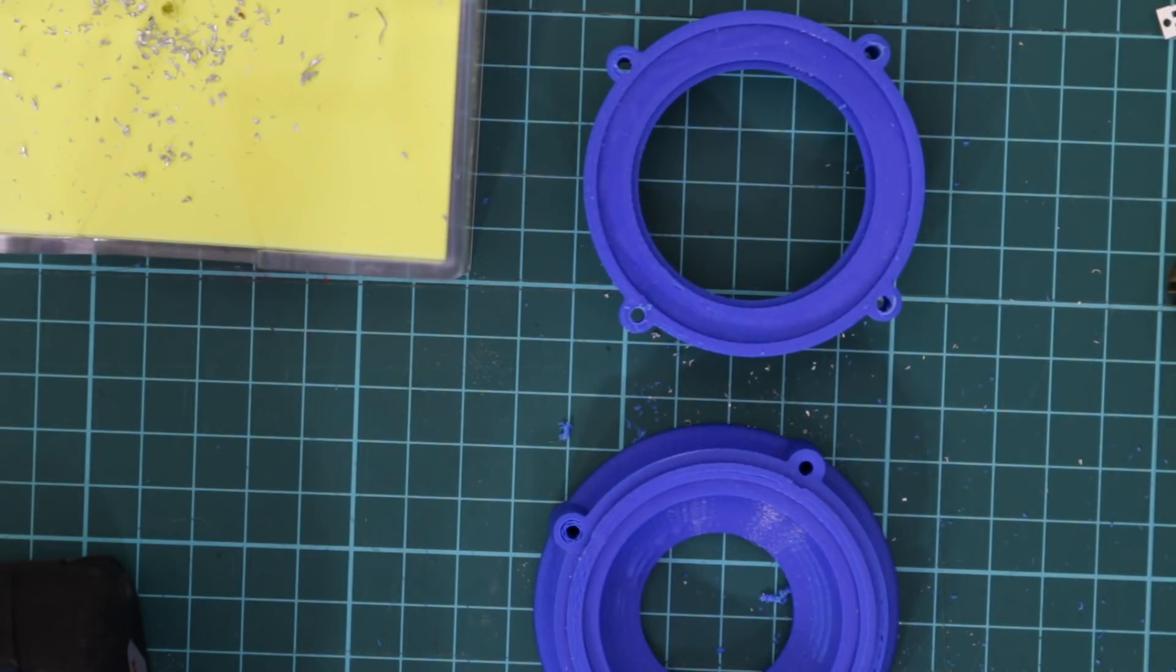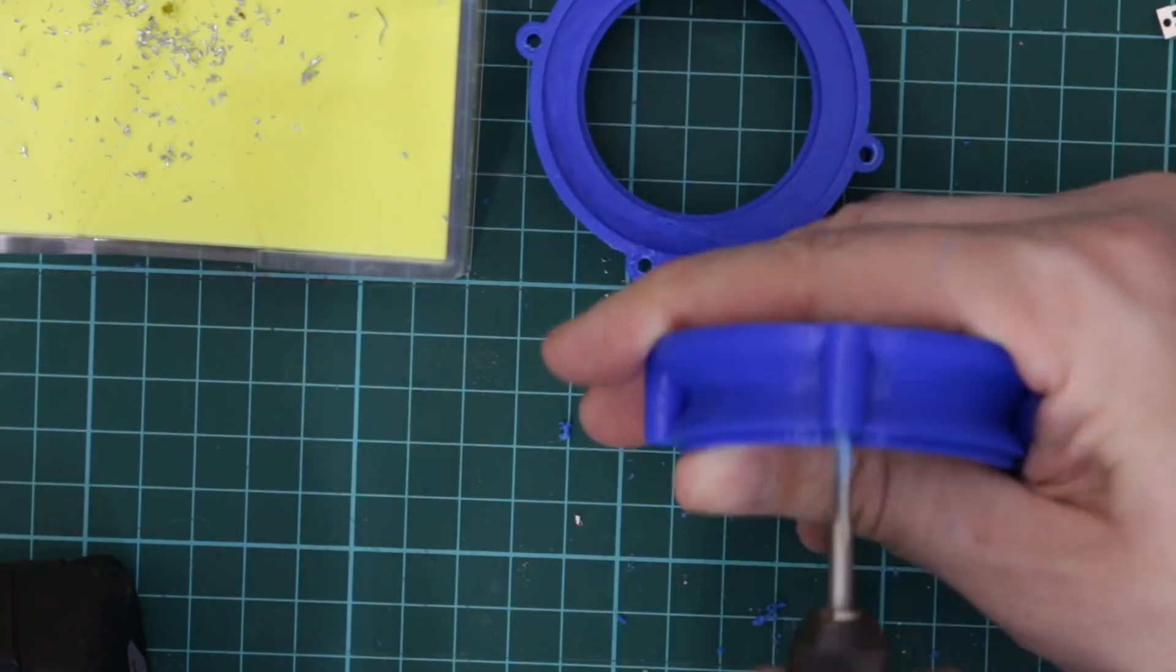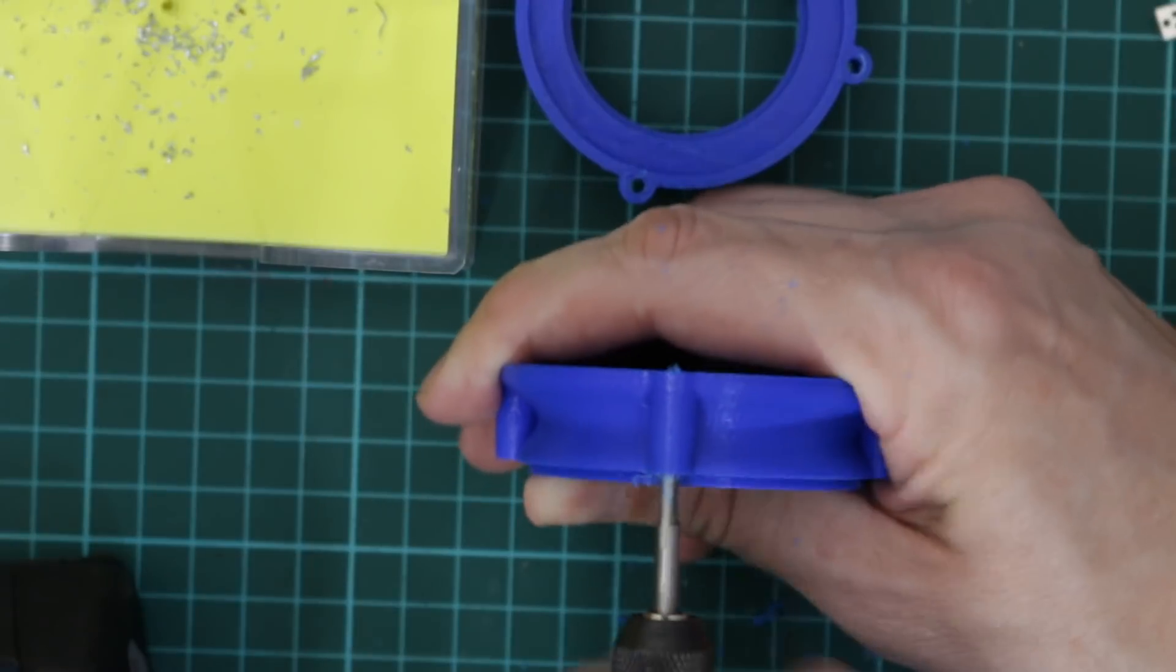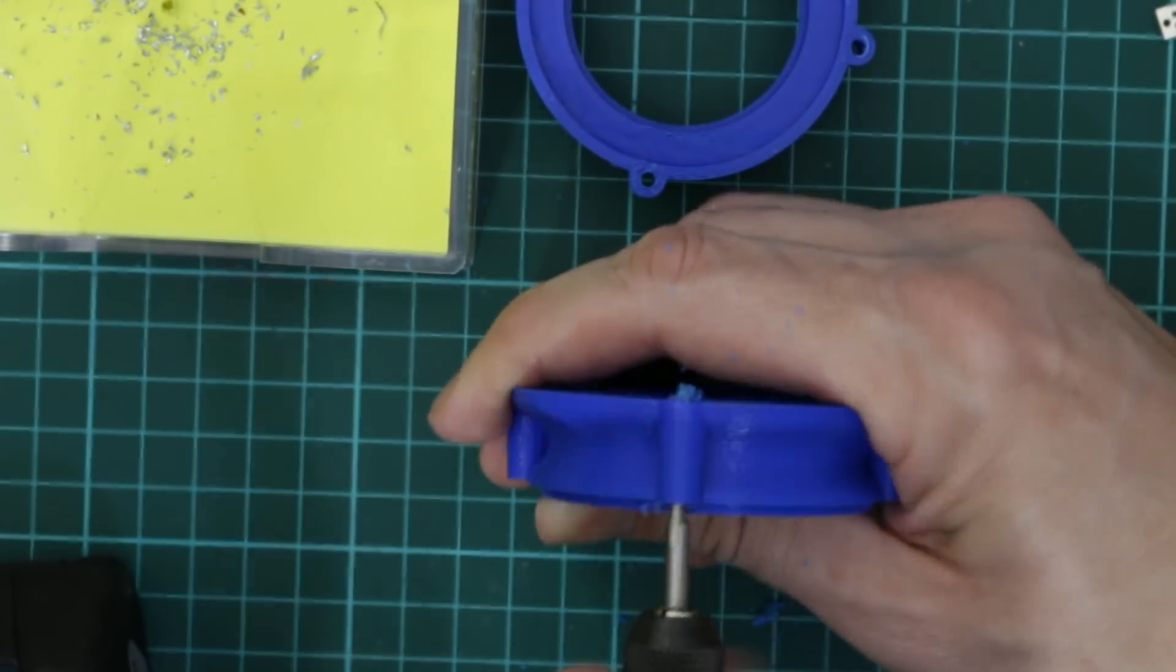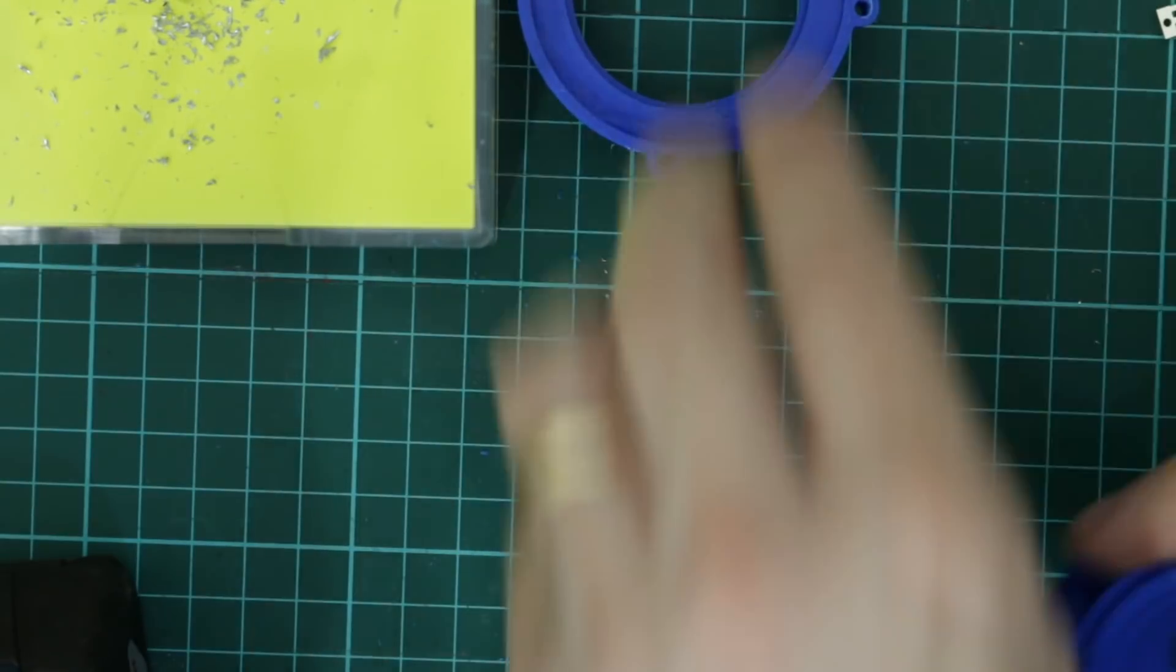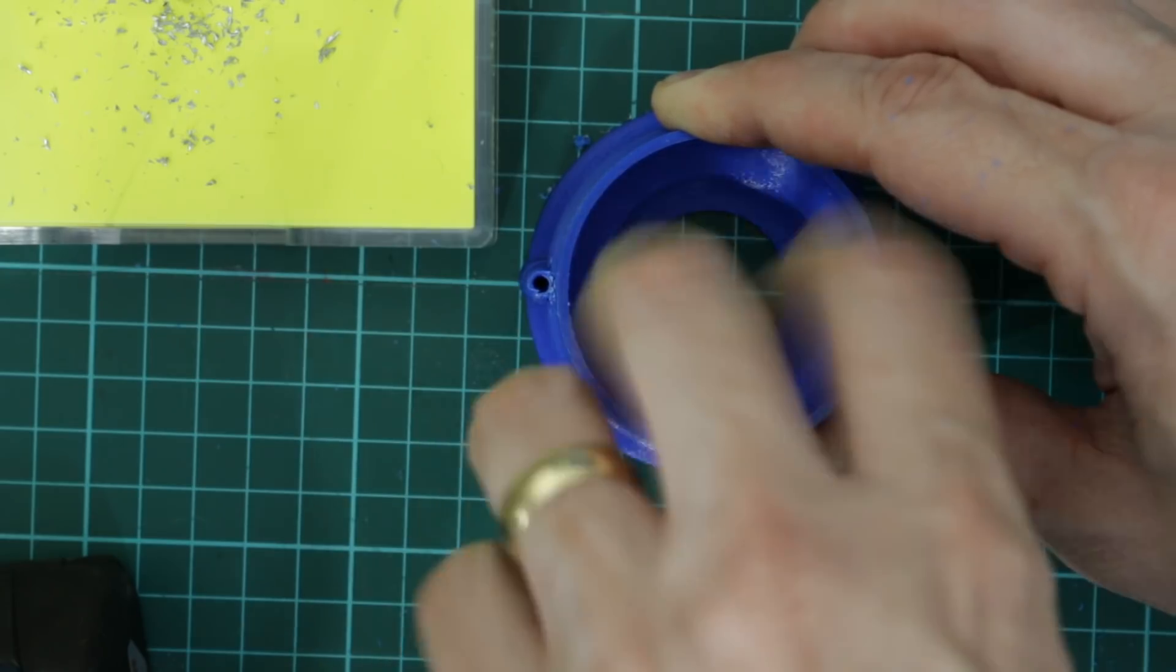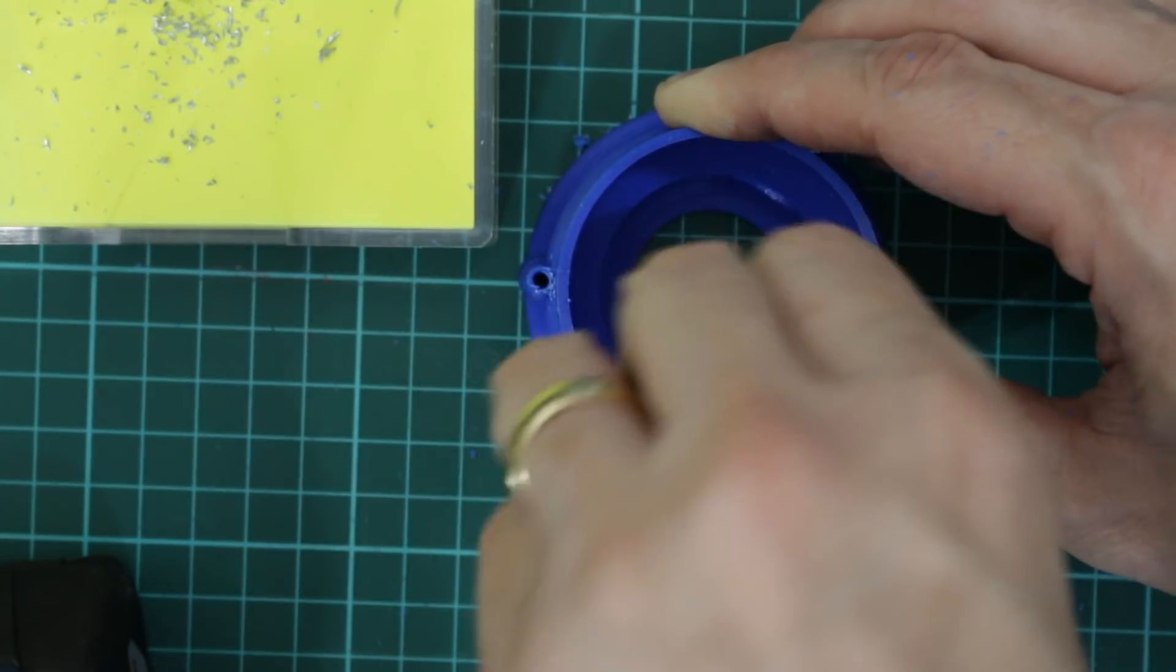And while I've got the taps out I might as well tap the holes for the lens and reflector components. So this is just the same size, an M3 bolt that's going to go through this. It just means I'll be able to put the bolts through to hold the lens assembly onto the heat sink.